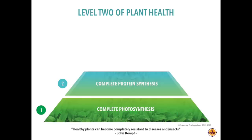The second stage is complete protein synthesis. In each 24-hour photo period, all nitrogen that plants absorb — in the form of ammonium, nitrate, urea, or amino acids from the soil profile — is quickly converted to complete proteins, with no presence of nitrate or ammonium remaining within the plant sap.